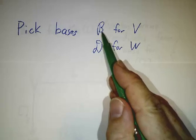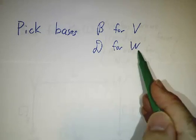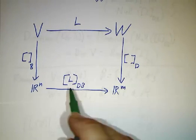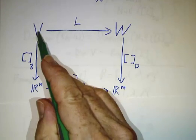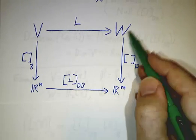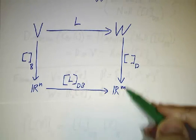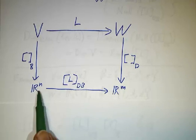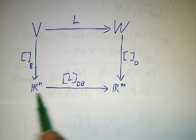What they have to do with each other has to do with what happens when you use coordinates and bases. So if you pick a basis B for V and D for W, then you can represent the linear transformation by a matrix. The basis B makes V look like Rⁿ, D makes W look like Rᵐ, and the map between them looks like a matrix.